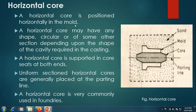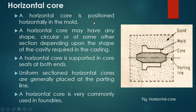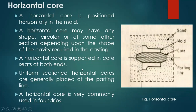The horizontal core is positioned horizontally in the mold. It may have any shape — circular or any other cross-section — depending on the shape of cavity required in the final casting. You can have any type of cavities in the mold cavity, and the core is placed inside accordingly. The horizontal core is supported in the core seats at both ends.